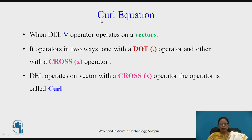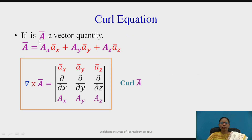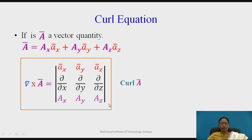Now the last operation: curl. The del operator operates on vectors in two ways — dot and cross. When it operates with the dot it is divergence; when it operates with the cross, the operation is called curl. For a vector A = Ax âx + Ay ây + Az âz, del cross A is called curl A. It can be expressed as the determinant of a 3x3 matrix with unit vectors âx, ây, âz in the first row; ∂/∂x, ∂/∂y, ∂/∂z in the second row; and the magnitudes Ax, Ay, Az in the third row.